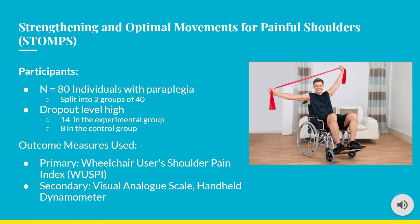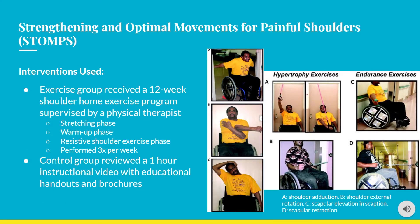In total, 80 subjects with paraplegia participated and were split into two groups of 40. One limitation was a high dropout rate — 14 subjects in the experimental group and 8 in the control group. Outcome measures included the WUSPI as the primary measure, the visual analog scale for pain levels, and a handheld dynamometer for muscle strength. The exercise group received a 12-week shoulder home exercise program supervised by a physical therapist, which came with three phases.